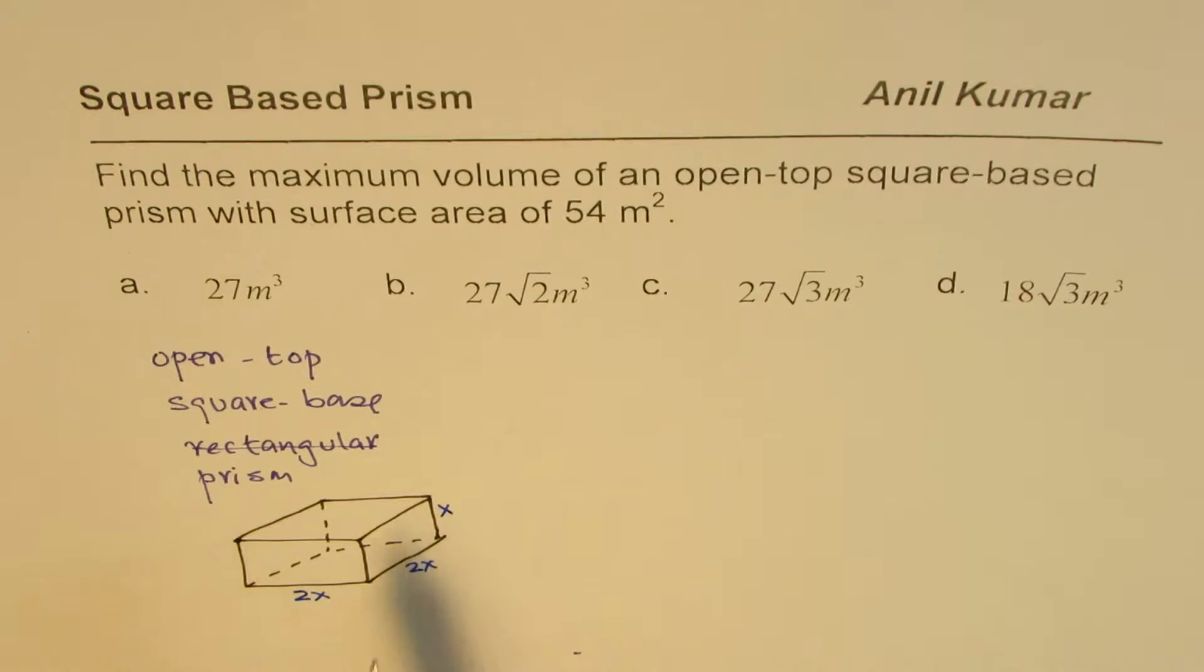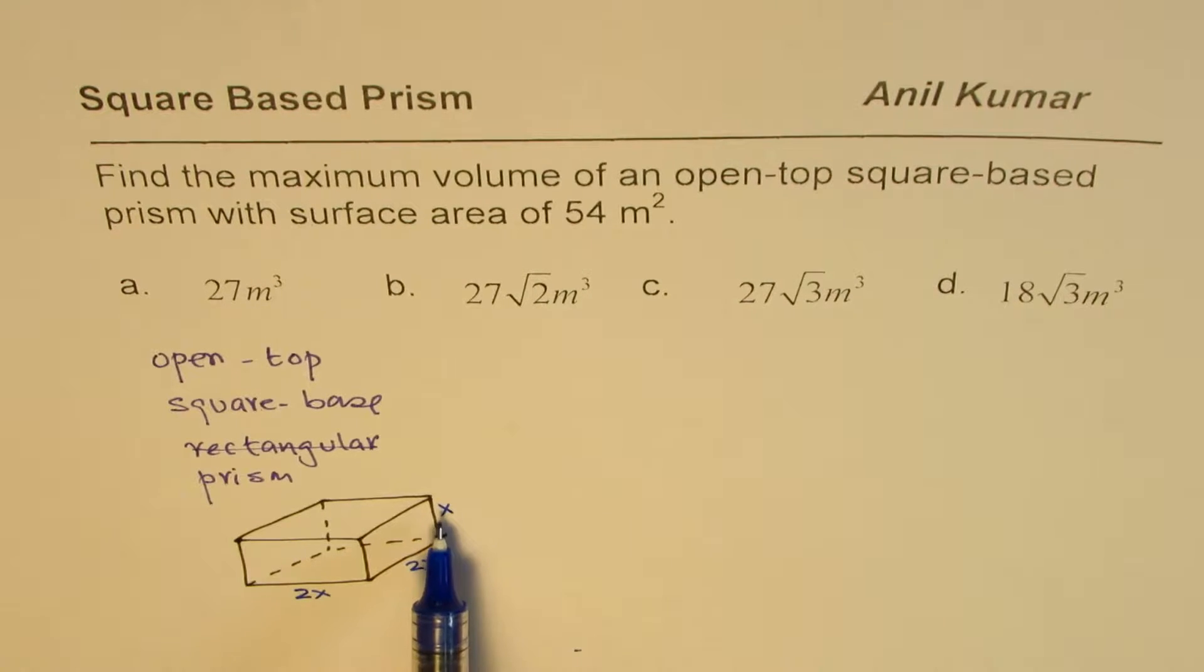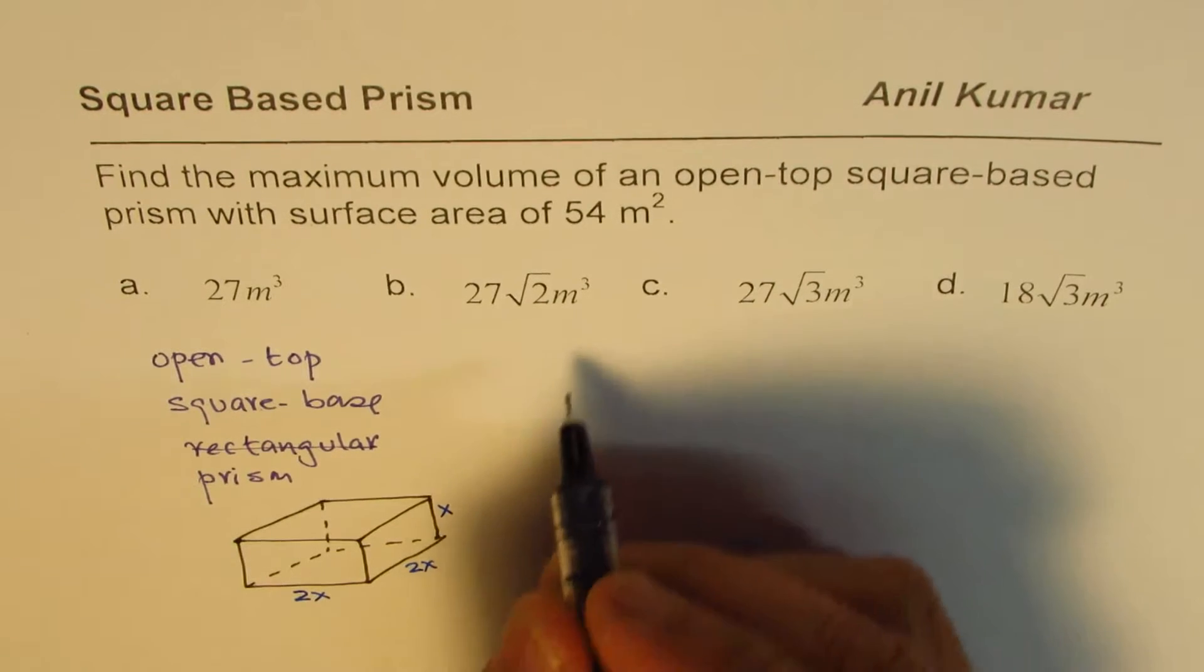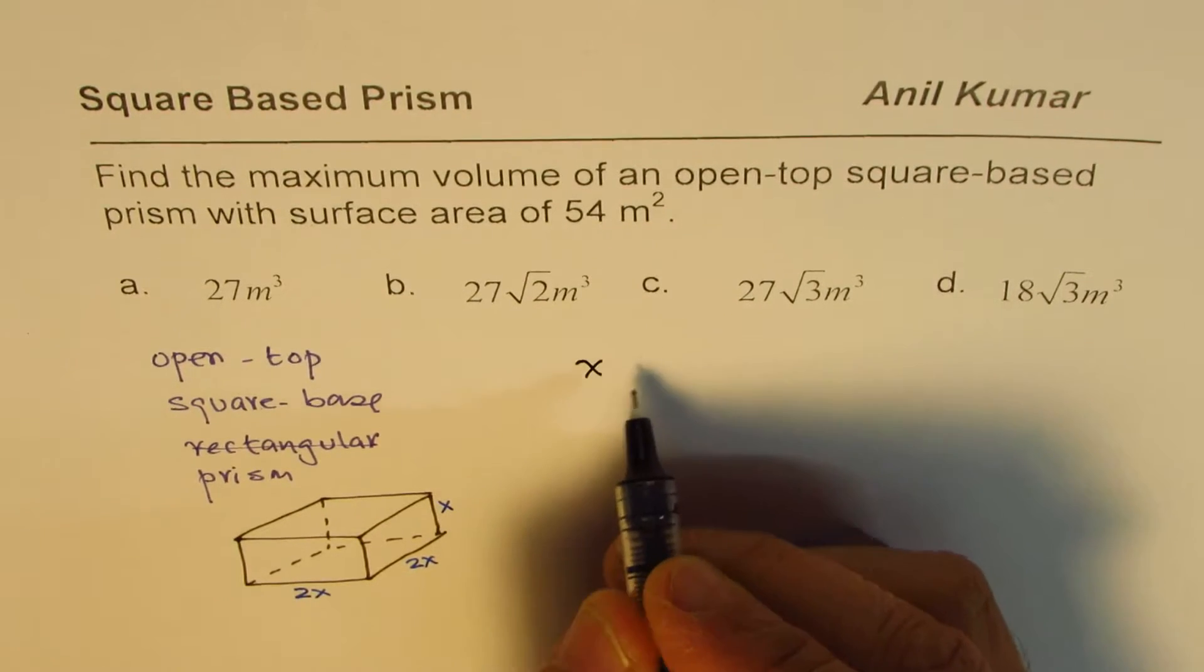So for any open-top square-based prism for a fixed area, maximum volume shape is something like this. So the ratio of height to the length or width is half. So that is how it is. This is one thing to remember. If you remember this, you can always get the answer. The other thing is: how much is x?